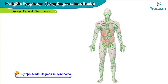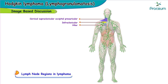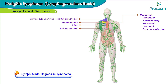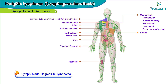Here's a picture showing the lymph nodal regions in lymphoma. It can be seen in the cervical, supraclavicular, occipital, or preauricular areas, as well as the infraclavicular area, axillary, and pectoral regions. The mediastinal region — including prevascular, aortopulmonary, paratracheal, pretracheal, subcarinal, and posterior mediastinal lymph nodes — can also be affected. Hodgkin's lymphoma can also involve the spleen, epitrochlear, mesenteric, iliac, inguinal, femoral, popliteal, and para-aortic lymph nodes. In a sense, any lymph nodal region can be involved in patients with Hodgkin's lymphoma.